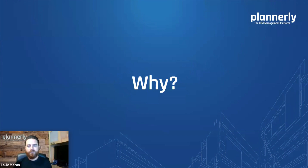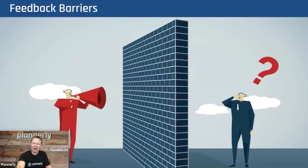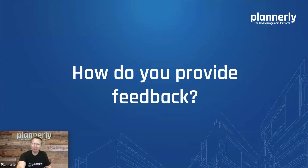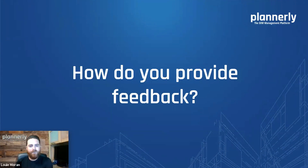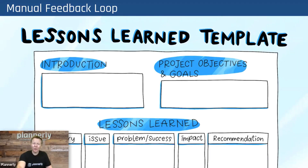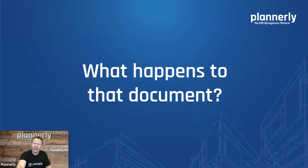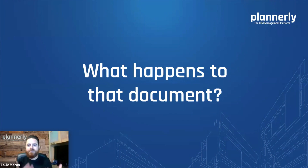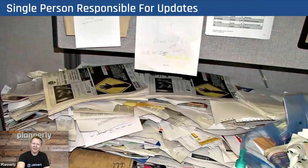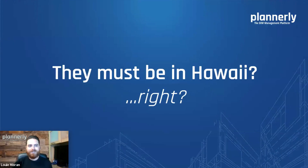Why is that? Well, when we provide feedback there are barriers to incorporating it, and barriers in general to keeping things up to date — lots of standards around the world and lots of different ways of doing things. The feedback loop is a pretty manual process: we have a lessons learned template, a very manual form that we send back to somebody. And then what happens to that document? Not sure really, because there's only one or two people responsible for the update.